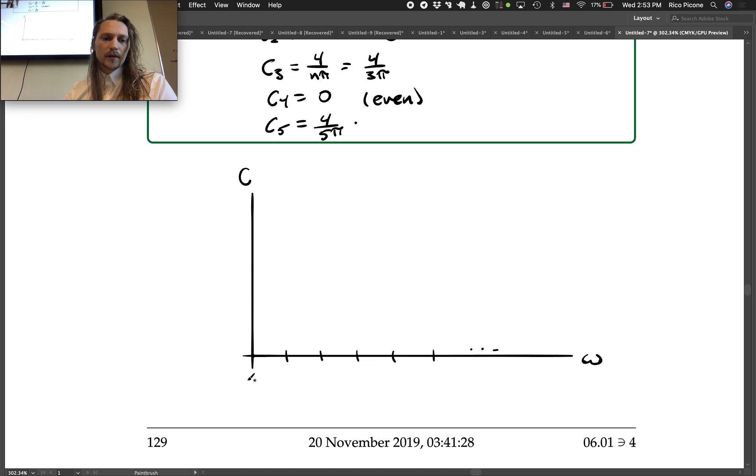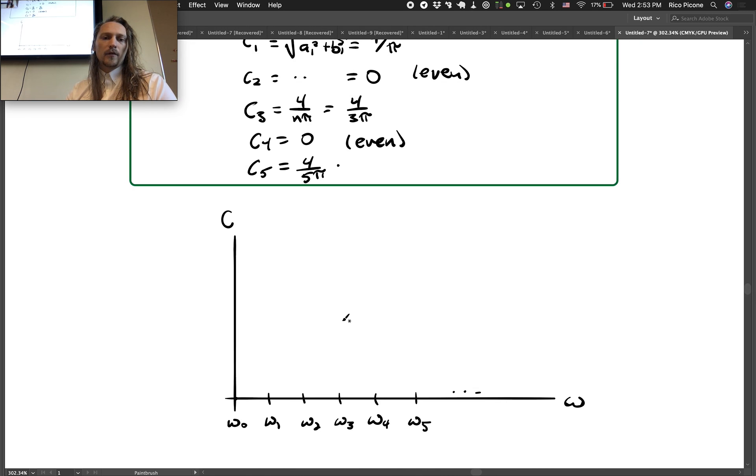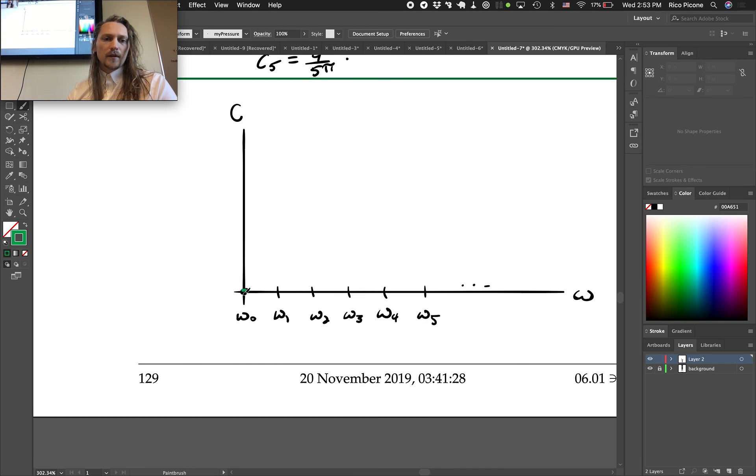So we can call this omega 0, omega 1, omega 2, omega 3, omega 4, omega 5. And we've got our amplitudes the c's. So we've got 0 and then 4 over pi. So 0, I'll use a different color.